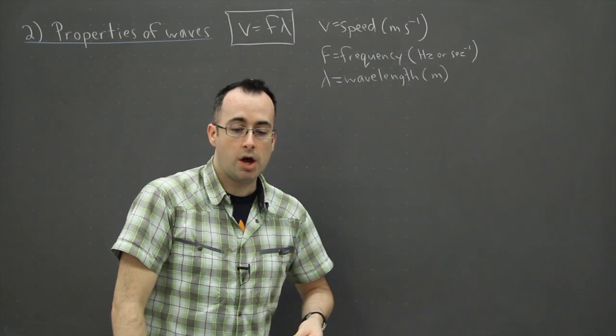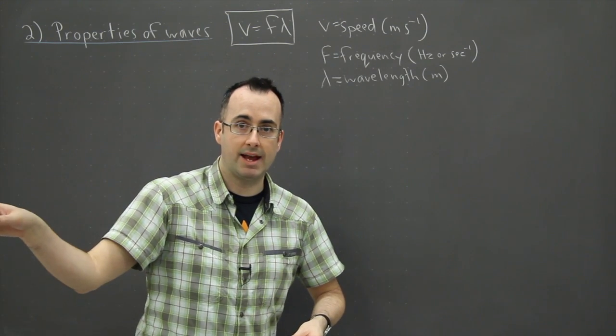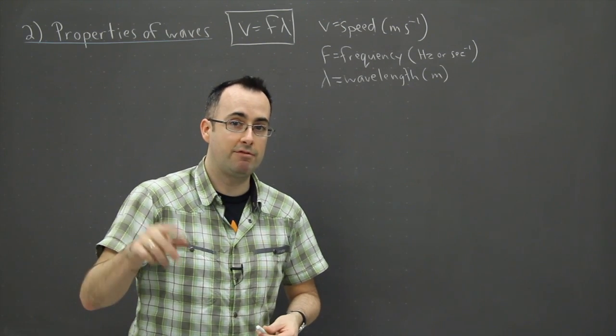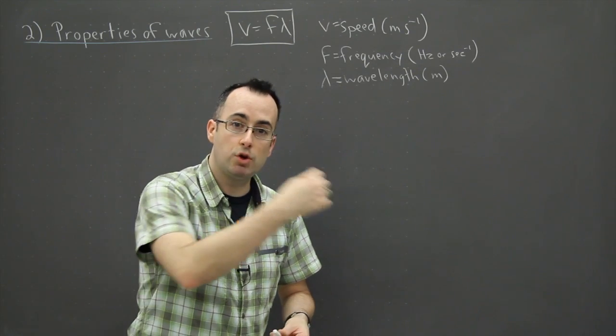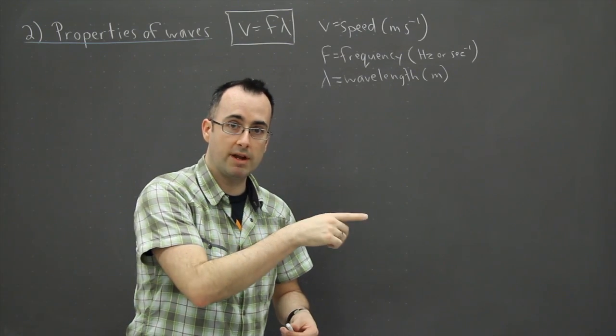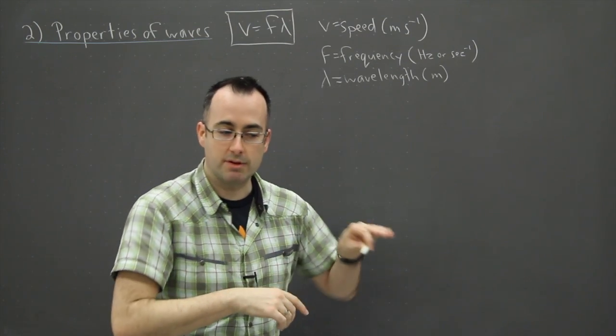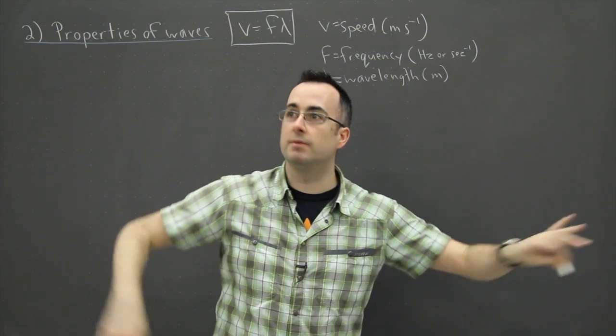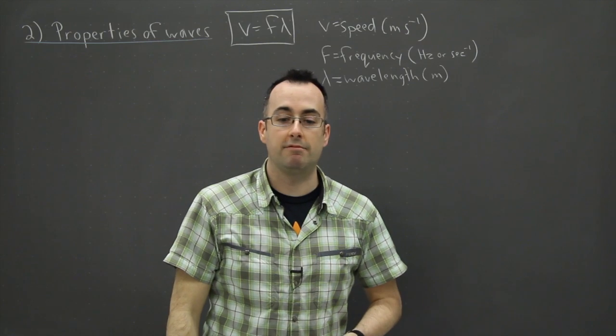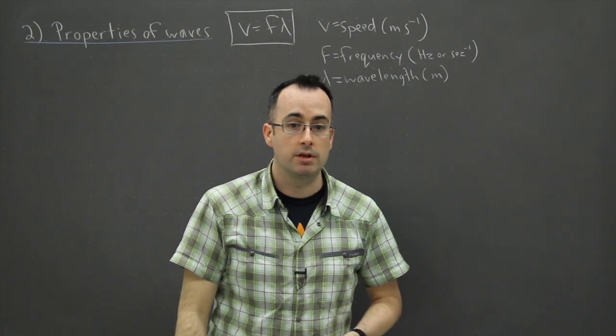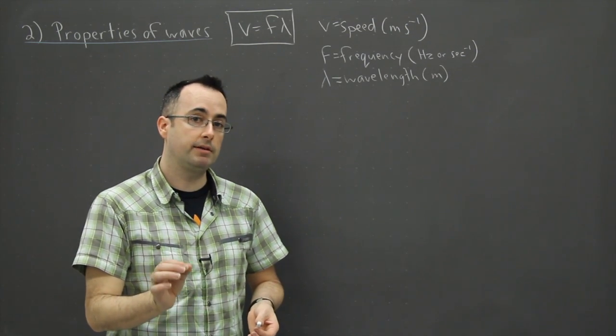If something has a wavelength way past red that we can't see, that's infrared. If something is way bluer than blue, a smaller wavelength than what we can see, that's ultraviolet. At the extremes we have x-rays, microwaves, radio waves—all different colors of light.